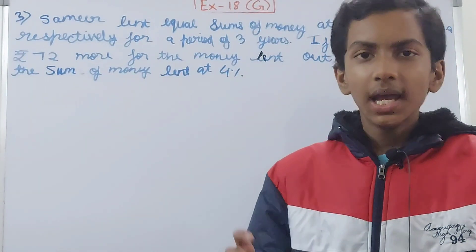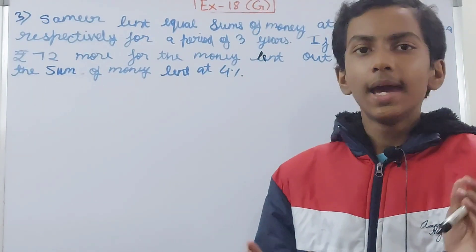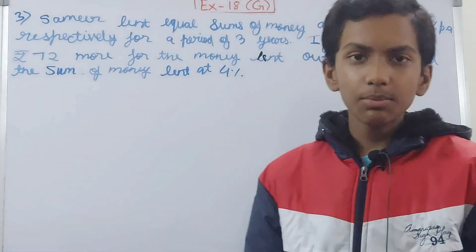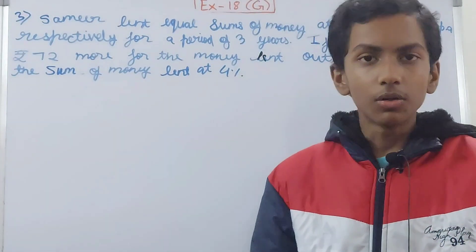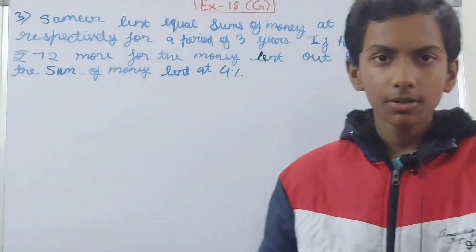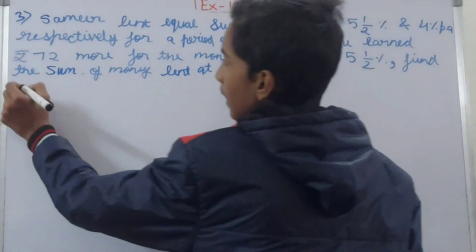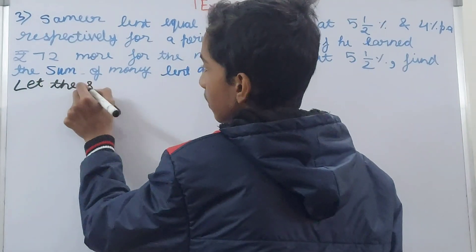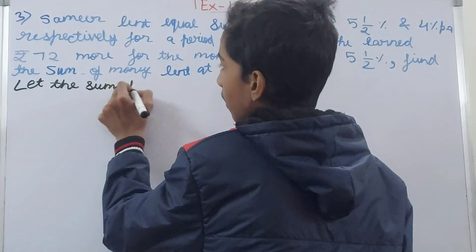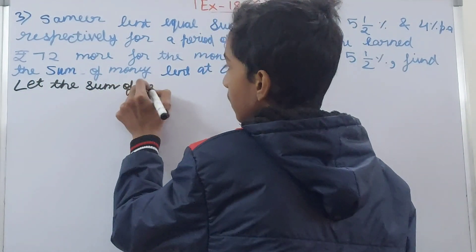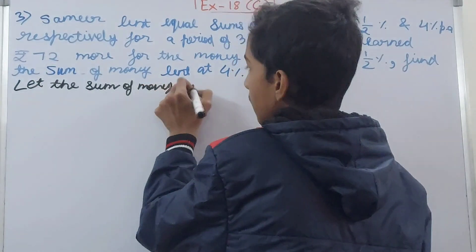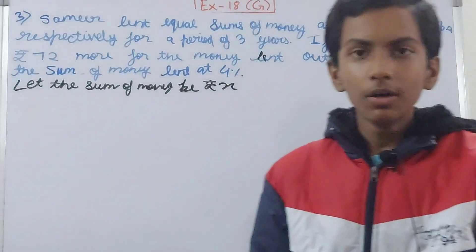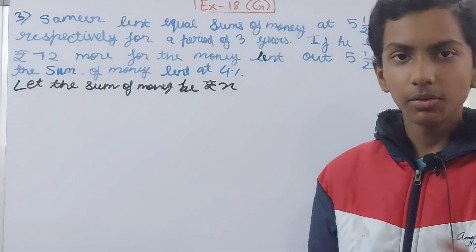Two different rates are given — one is 5½% and another is 4% — and both of these rates are applied on the same sum, which we do not know. So we can assume it to be x. Let the sum of money be ₹x.